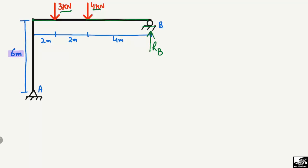We have to find out the support reactions RB and also RA. It is a hinge support, so it can also take the horizontal reaction RAx, but in this case it is equal to zero because there is no horizontal load acting on the frame structure. So we only need to find RA.